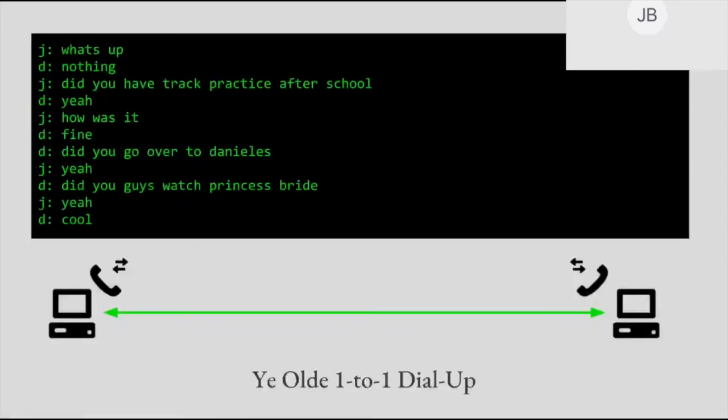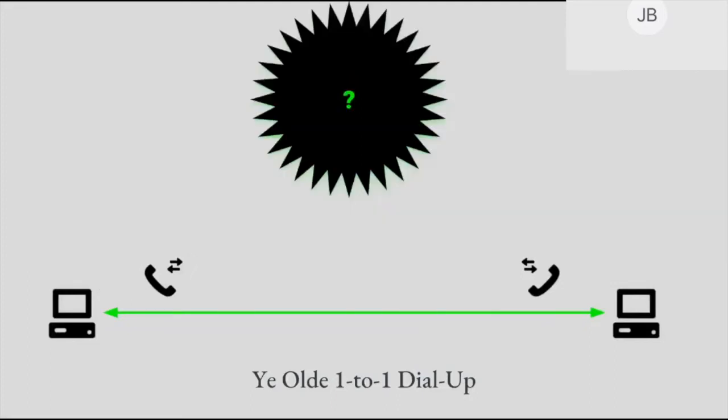Your computer used its modem to call another computer over the phone, and this is basically like a non-distributed peer-to-peer model. We're starting here because it is a very straightforward architecture — one device directly connected to another device — and that's going to make it a lot easier for us to figure out how much electricity we used doing this. But as we'll see, that's actually easier said than done.